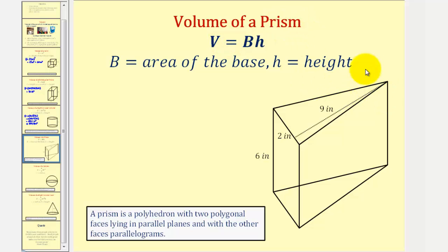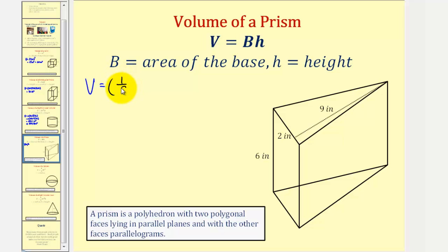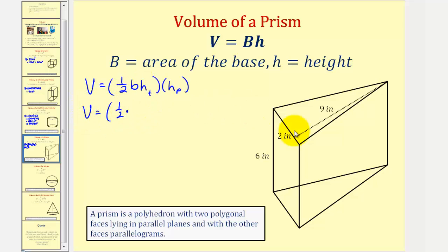Now let's find the volume of a prism. For our example we have a triangular prism, because the two bases are triangles. A prism is a polyhedron with two polygon faces lying in parallel planes, and with the other faces parallelograms. To find the volume of a prism, we find the product of capital B and H, where capital B is the area of the base and H is the height. So for our triangular prism, the volume equals the area of the base — the area of this triangle — where the area formula is one-half base times height. I'll use H sub T for the triangle's height, and H sub P for the height of the prism. So the volume equals one-half times the base of the triangle, which is two inches, times the height of the triangle, which is nine inches, times the height of the prism, which is six inches.